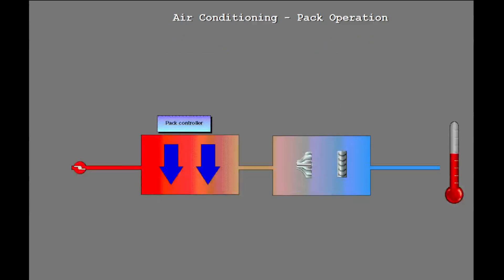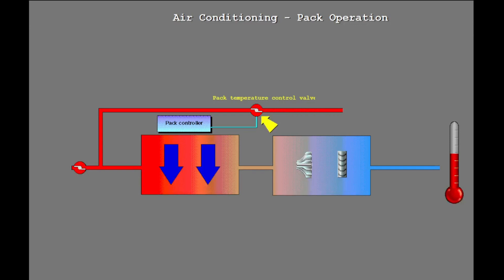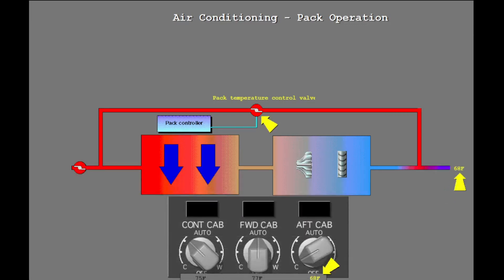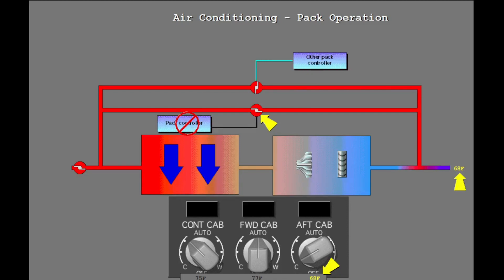The pack temperature control valve controls the quantity of warm air that is mixed with the cool air downstream of the air cycle machine. With the pack temperature control valve, the pack supplies air at the temperature of the zone with the lowest set temperature. If the main controller or valve fails, the opposite pack controller uses the standby pack temperature controller.